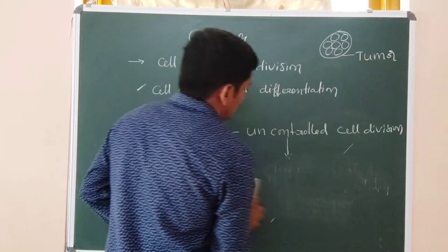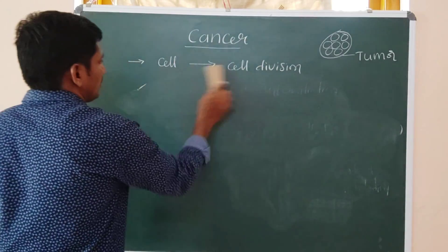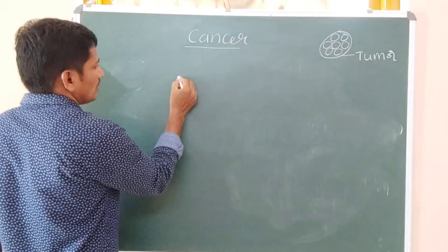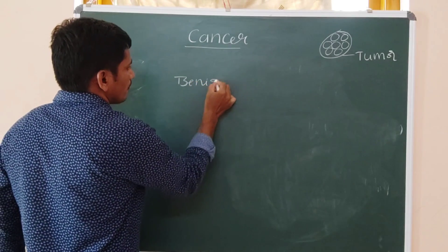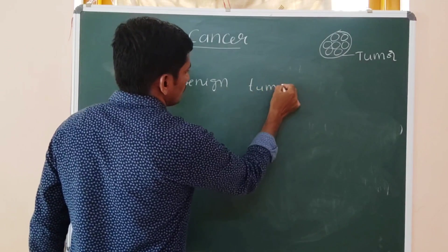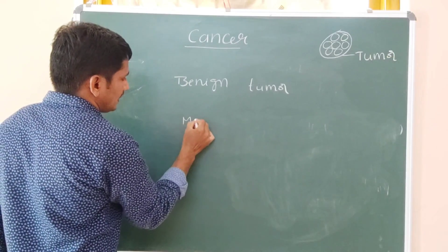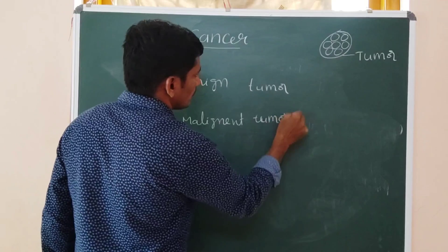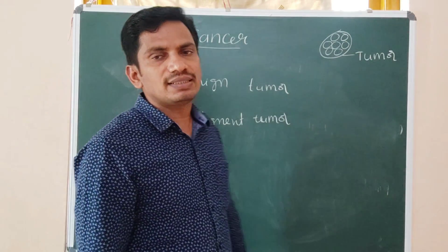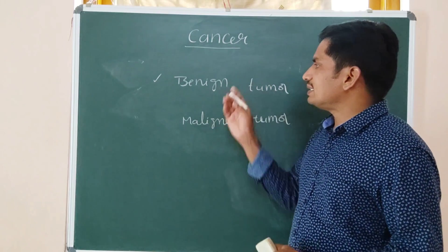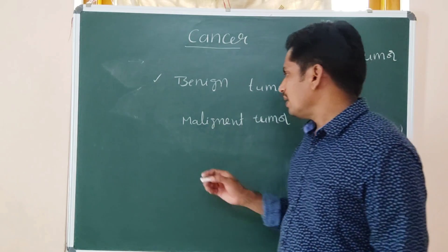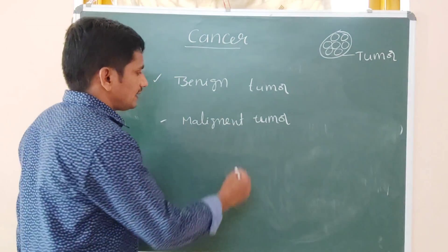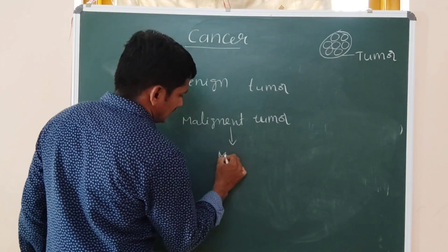Generally, tumors are divided into two types: benign tumor and malignant tumor. A benign tumor is not cancerous, not dangerous — we can easily remove and cure it. But a malignant tumor is carcinogenic in nature, cancerous in nature. It has a property called metastasis.